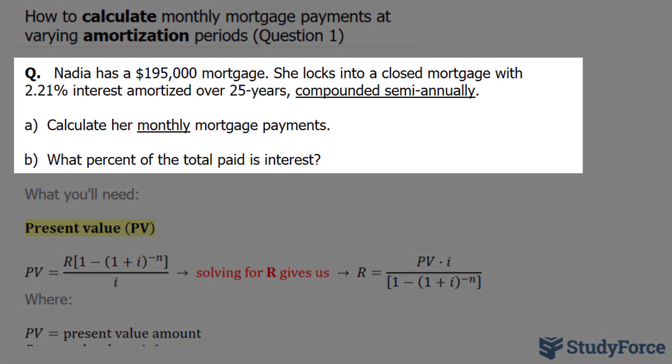The question reads, Nadia has a $195,000 mortgage. She locks into a closed mortgage with 2.21% interest amortized over 25 years, compounded semi-annually. Part A asks, calculate her monthly mortgage payments.